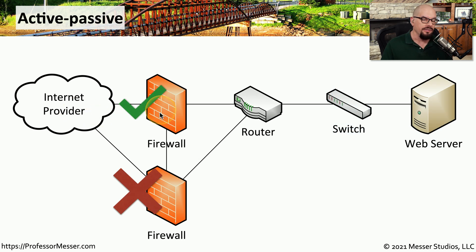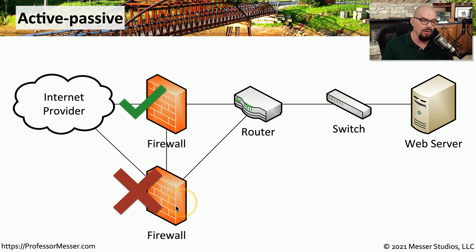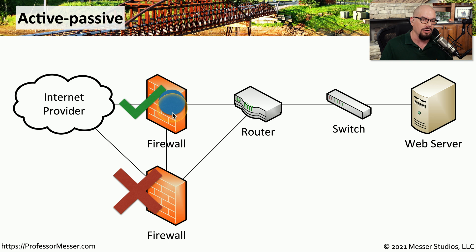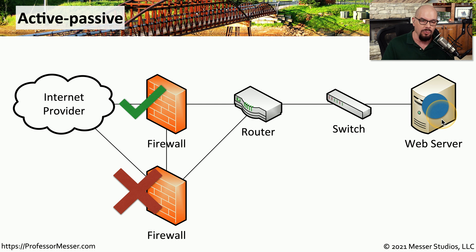Here's a common active-passive configuration for a firewall. You have an internet provider, one firewall that's currently active, and another firewall in the same network configuration that is currently configured as passive. The first firewall will be passing traffic, and the second firewall will be waiting for something to happen. There's a link between these firewalls with constant hello messages going back and forth so that both firewalls know if the other is available. Since this firewall is currently running as the active device, traffic will pass through normally on its way to the web server.